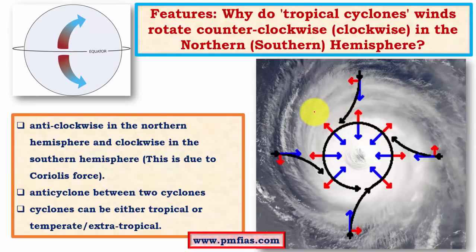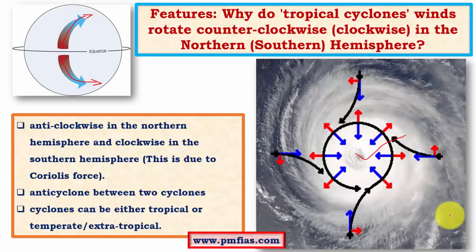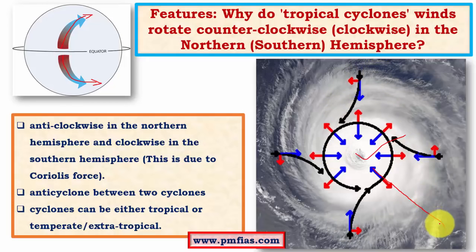Tropical cyclones rotate in an anti-clockwise direction in the Northern Hemisphere and clockwise in the Southern Hemisphere because of the Coriolis effect. Coriolis effect deflects winds to their right in the Northern Hemisphere and to their left in the Southern Hemisphere. For an intense low pressure system, instead of winds following a straight path inward, we have a spiraling effect created by the Coriolis force acting on the wind.